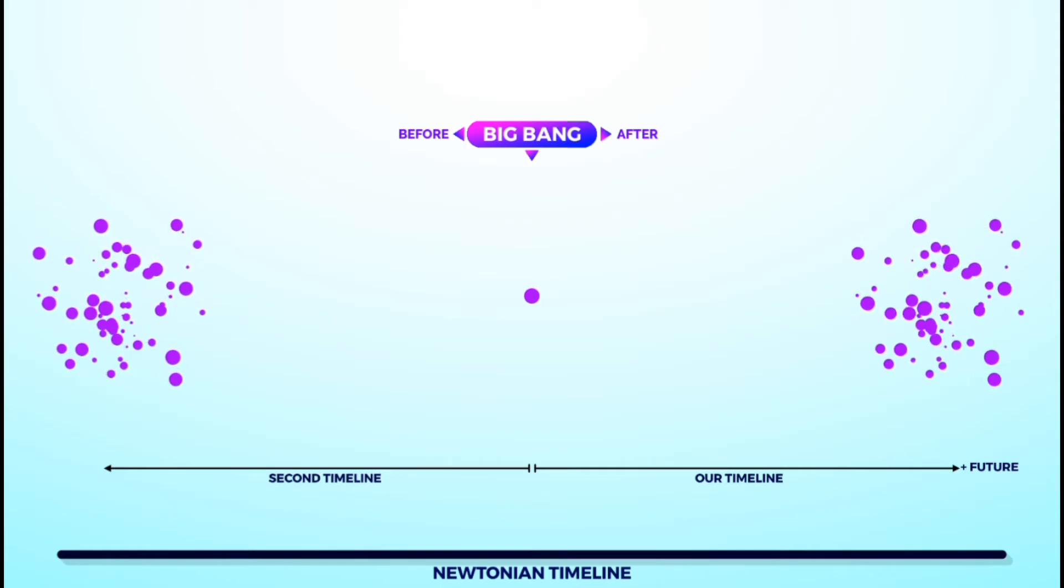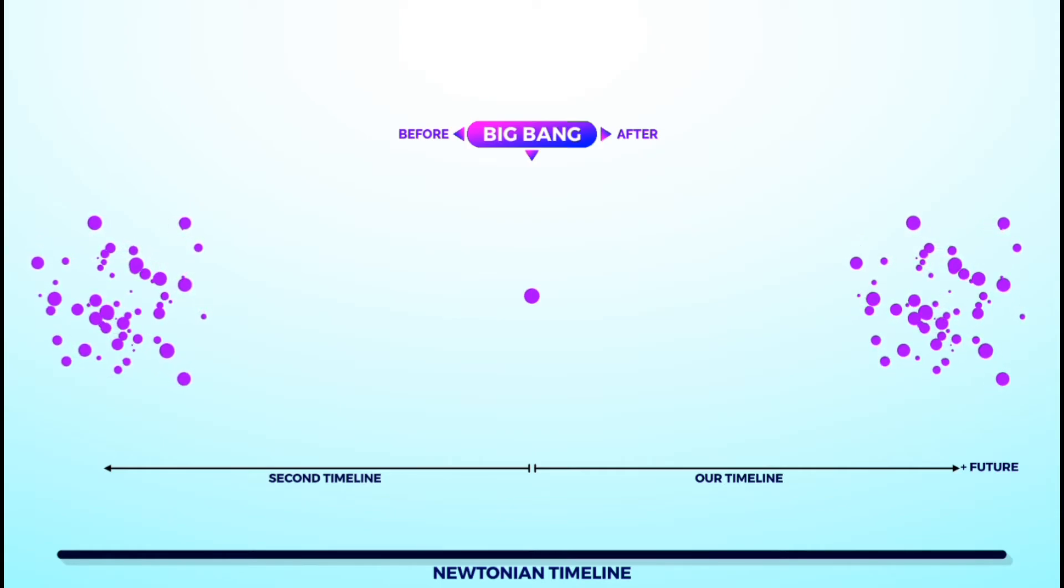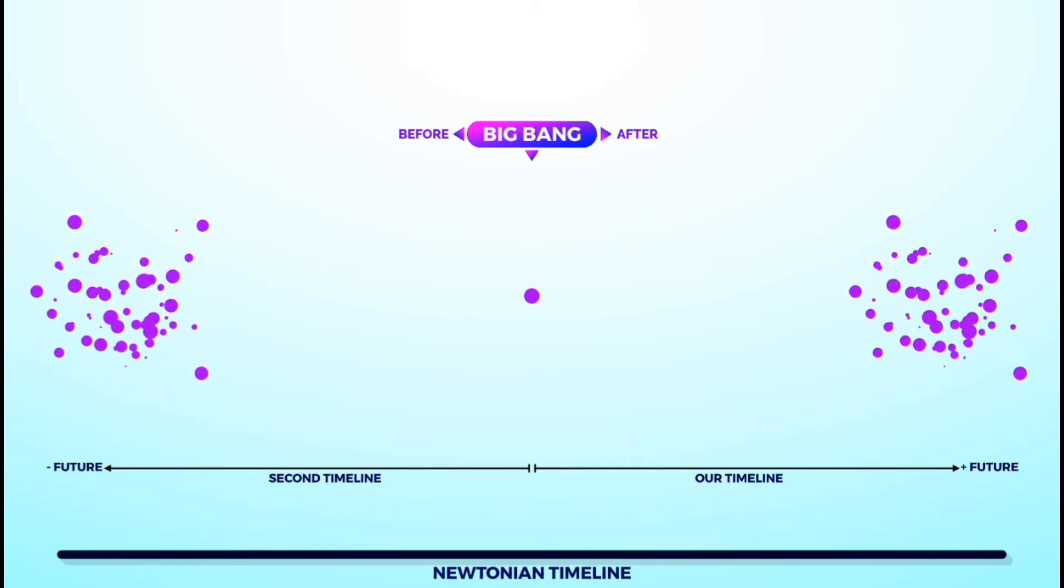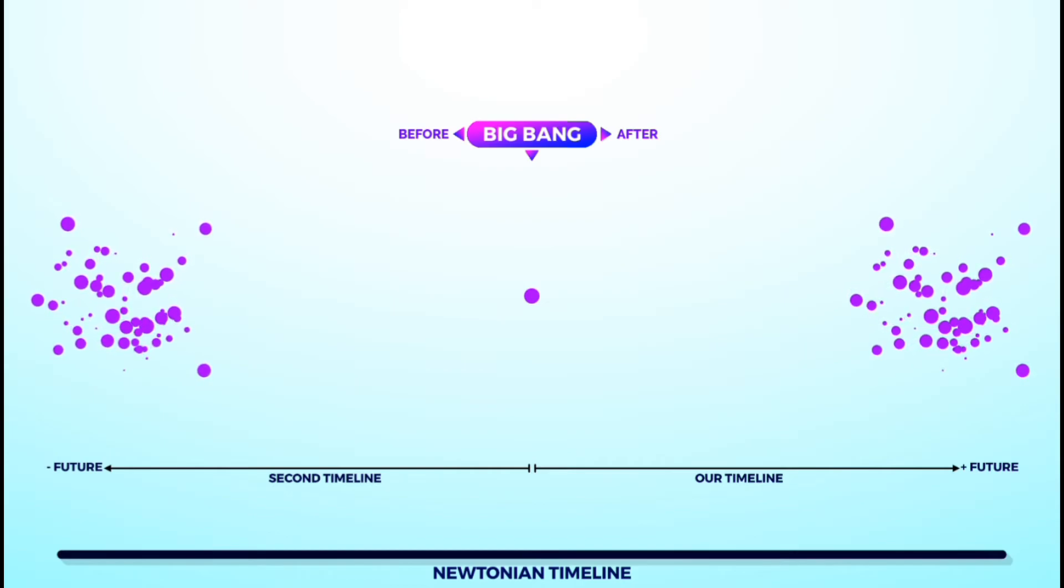this second arrow of time also points into the past, which according to this second time direction is actually the future of another universe that exists on the other side of the Big Bang. Isn't that fascinating? Our past is the future.